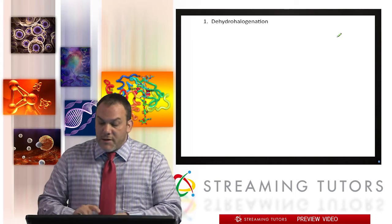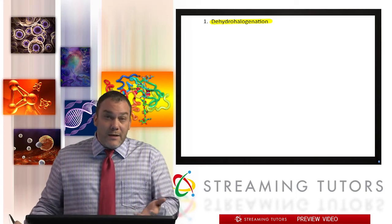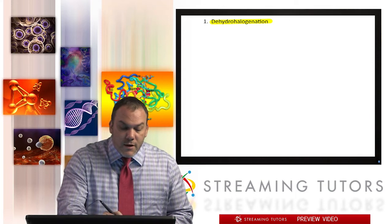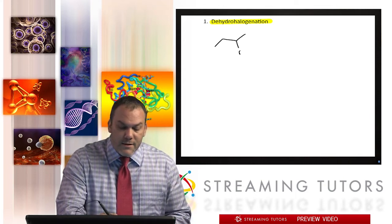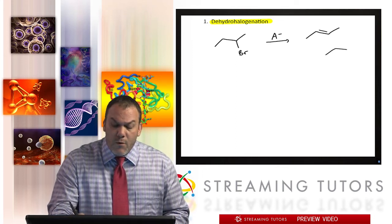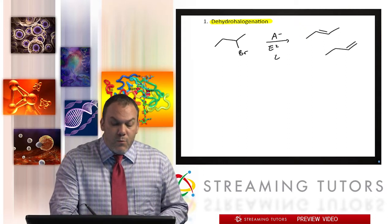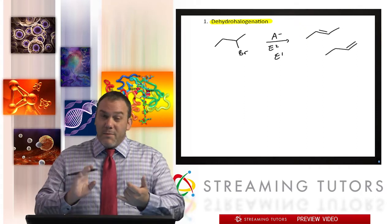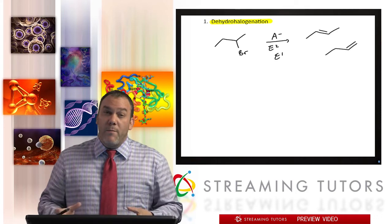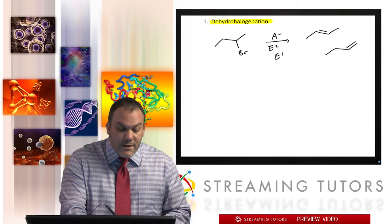The first thing is we're going to talk about what's known as dehydrohalogenation. You should know what that means because that's really just the E2 that you've already learned about. If you have an alkyl halide — let's say an alkyl bromide — you can treat it with a base and make alkenes. This could be E2 or E1, and it could be Zaitsev or Hoffman favored by using a bulky base or a small base.